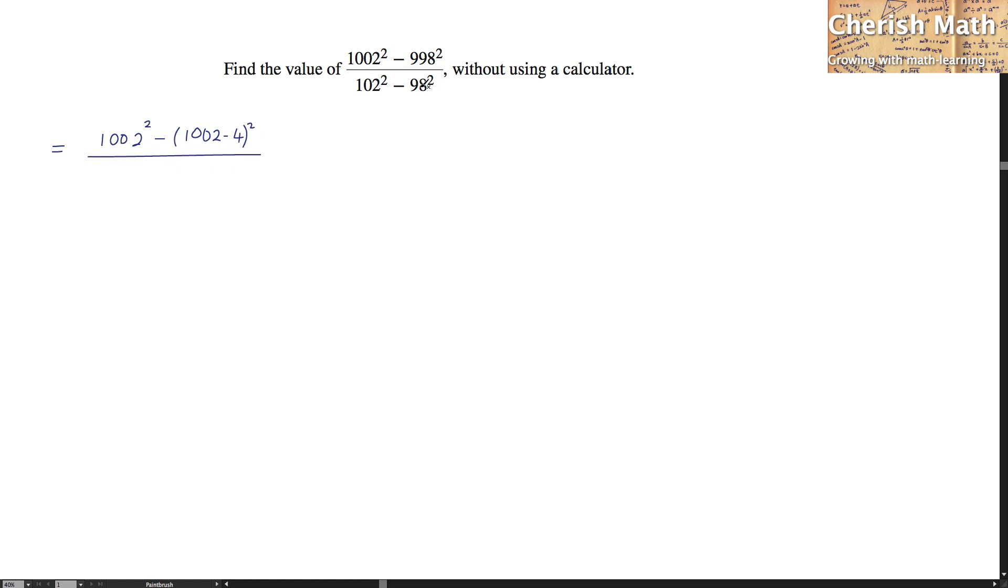The same thing happens with the 98, which is 102 to the power of 2 minus 102 minus 4 and I square it up. So now we are trying to expand whatever we need in brackets here.